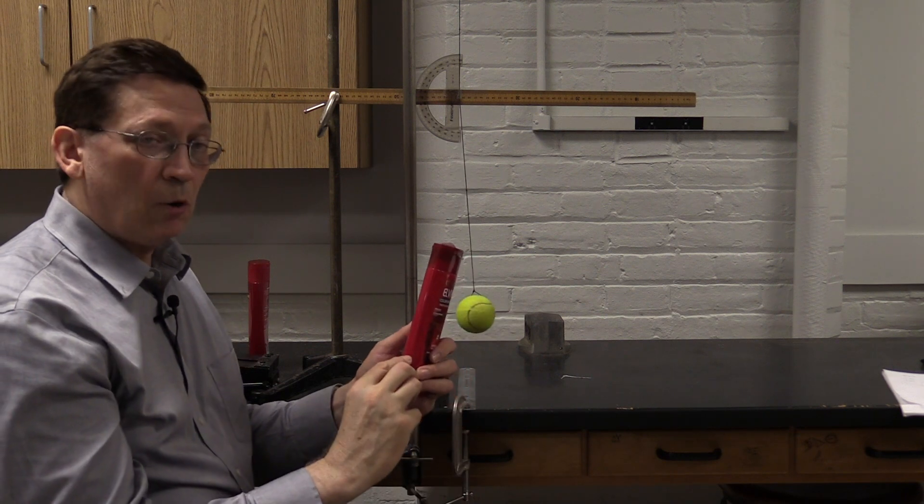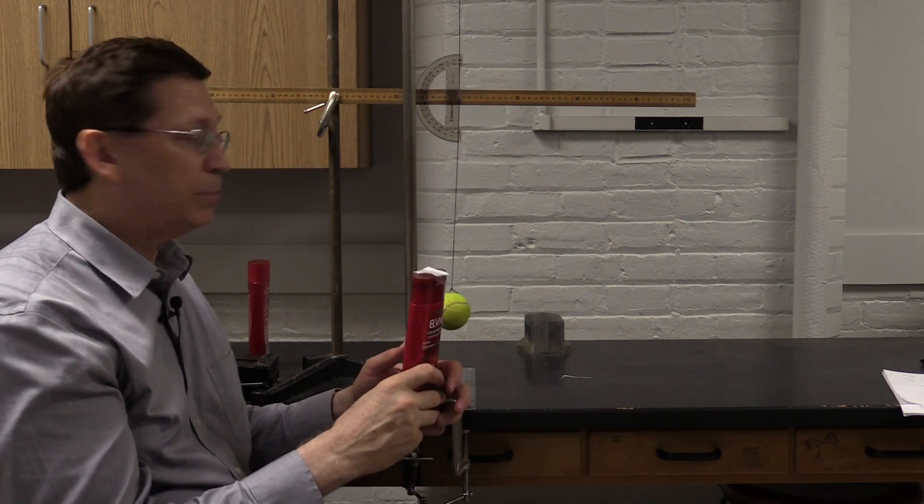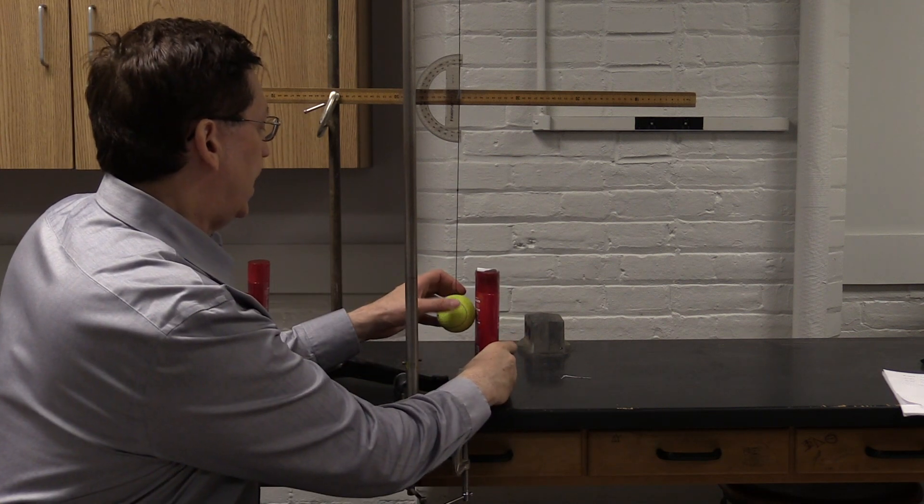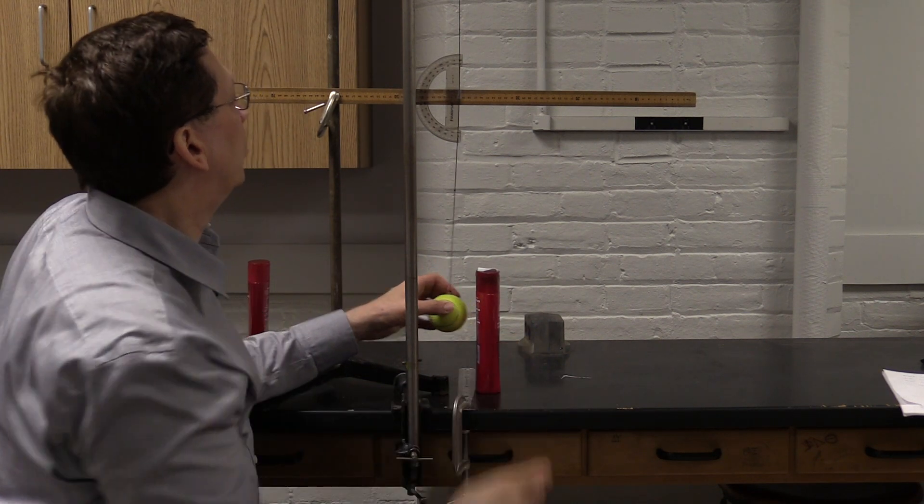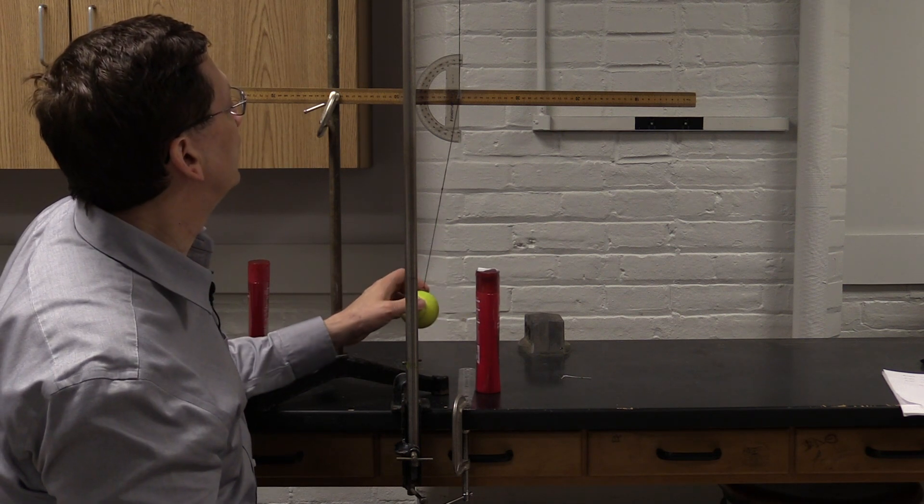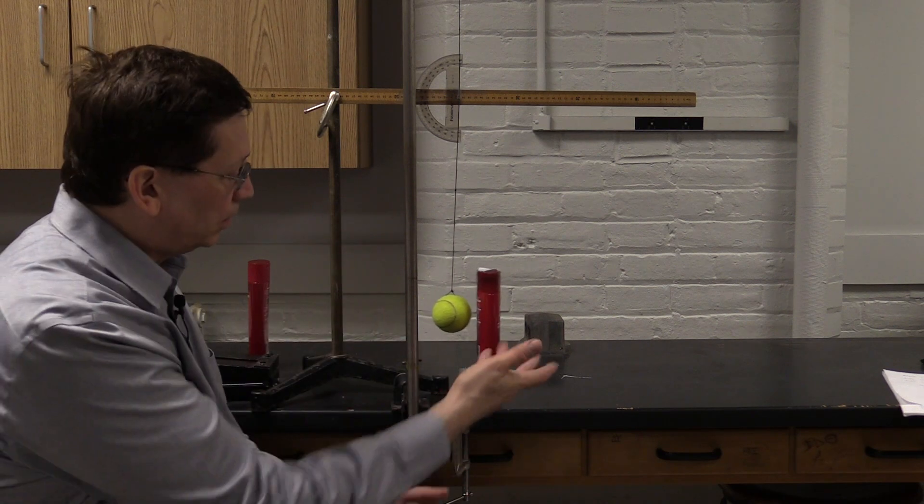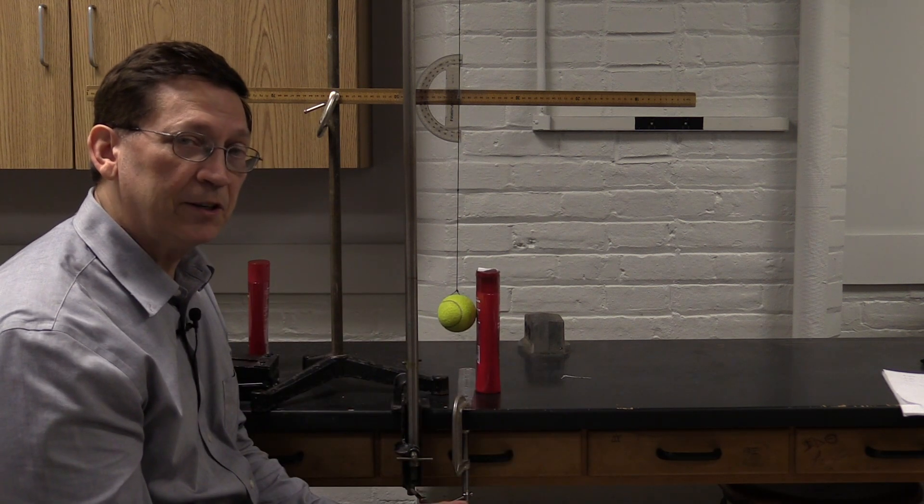When we have our bottle with the lowest center of mass, again, it's about filled to 30%. Again, it's still fairly stable. Five degrees, bounces off, no problem. Ten degrees, that impact, still, it rocks, but it comes back to stability.